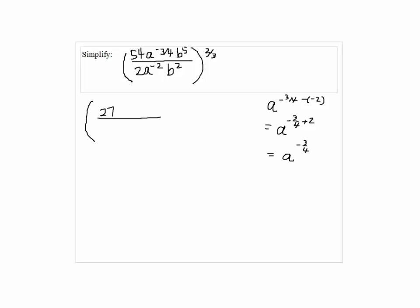We have a to the negative 3/4 plus 8/4, which is a to the 5/4. Since this is positive exponent, we are going to put the a to the 5/4 on top. And finally, b to the 5th minus 2 is b cubed.